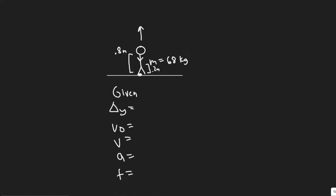In this problem, we're told that an exceptional standing jump would raise a person 0.8 meters off the ground. To do this, what force must a 68 kilogram person exert against the ground? Assume the person crouches a distance of 0.2 meters prior to jumping, and thus the upward force has this distance to act over before he leaves the ground.